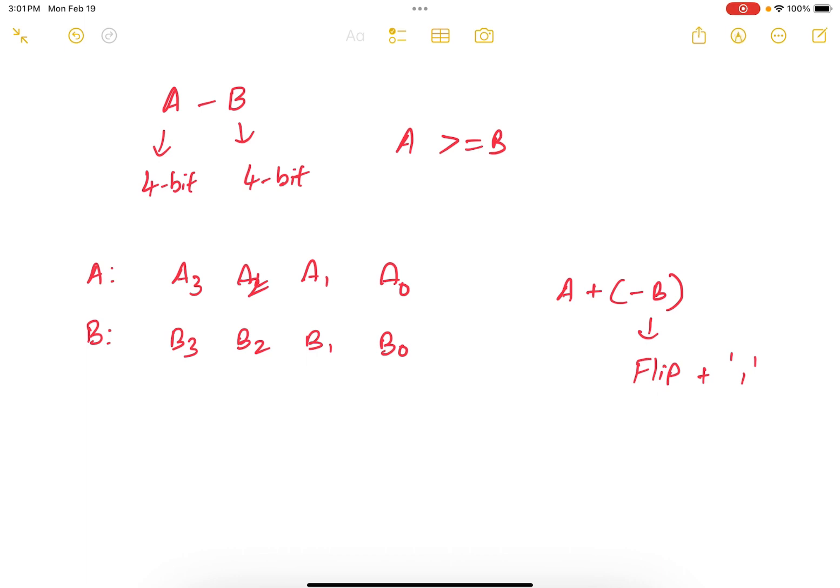In this case we are going to flip the bits of B, therefore this becomes B3 prime, B2 prime, B1 prime, and B0 prime, and then we add 1.